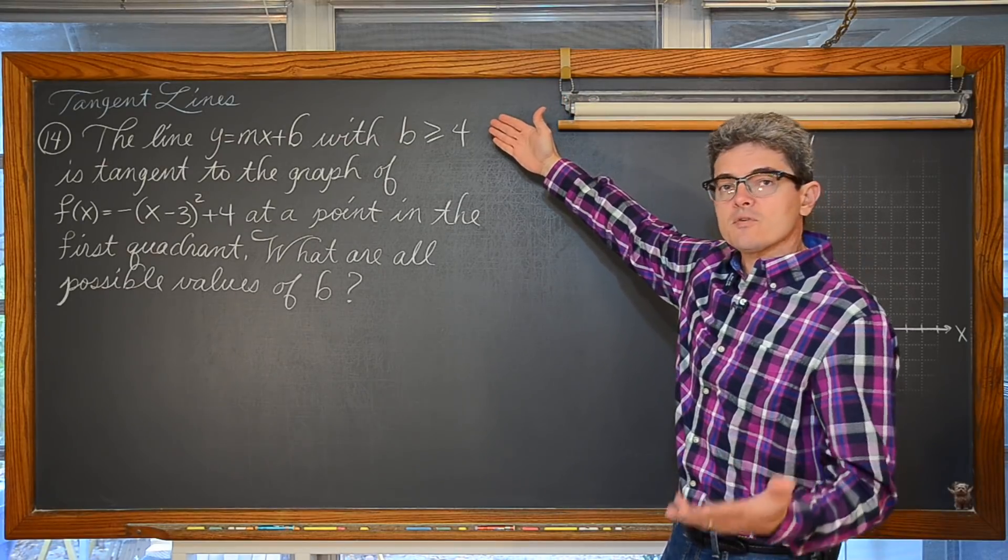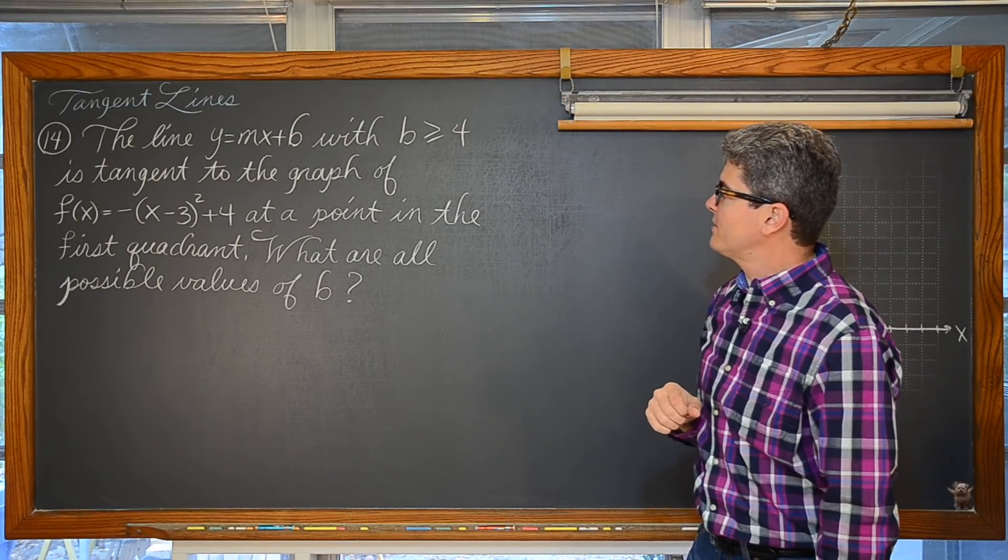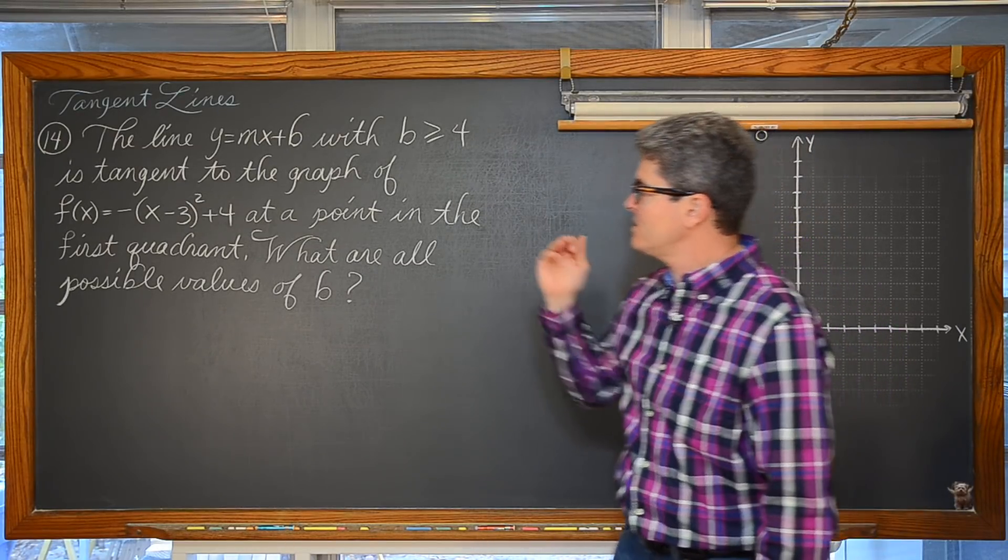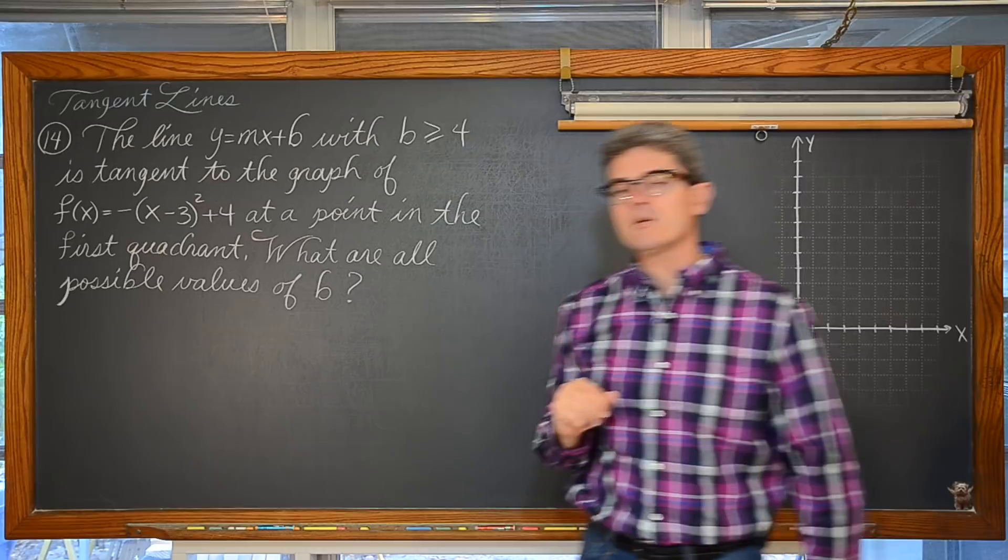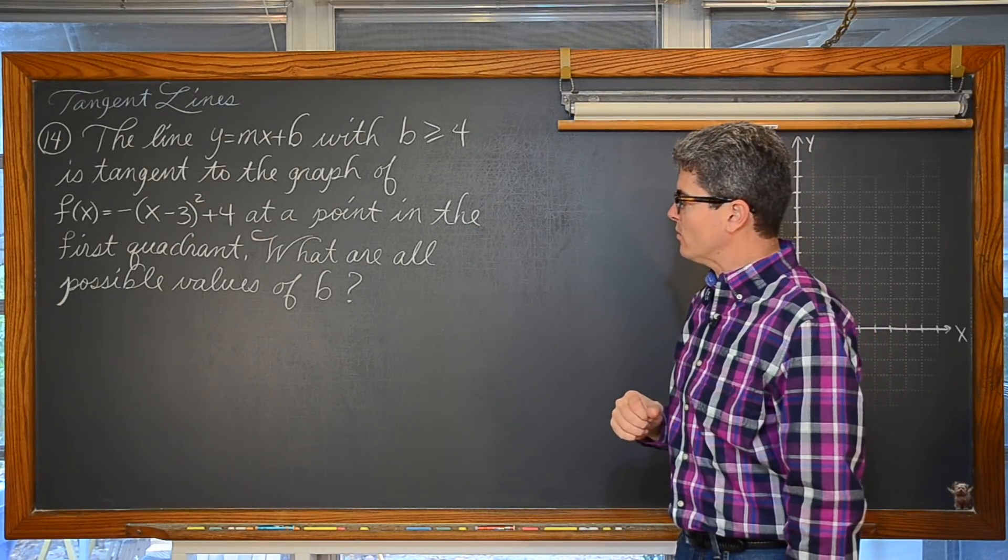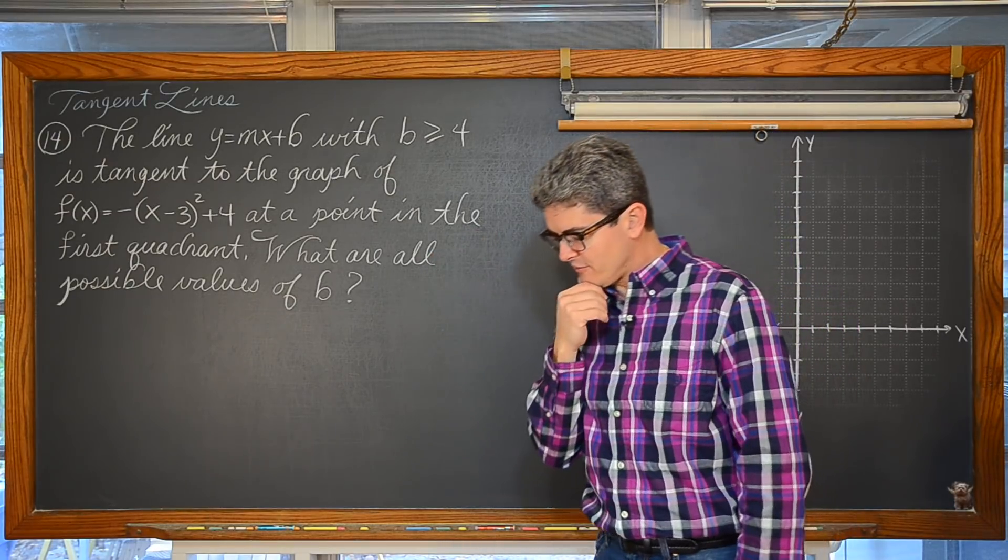We have here as our first example the line y equals mx plus b with b is greater than or equal to 4 is tangent to the graph of f equals negative (x minus 3) squared plus 4 at a point in the first quadrant. What are all possible values of b?